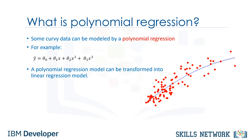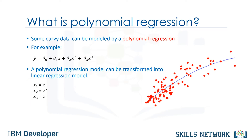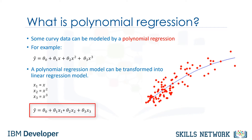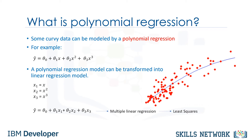Though the relationship between x and y is non-linear here, and polynomial regression can fit them, a polynomial regression model can still be expressed as linear regression. Given the third-degree polynomial equation, by defining x1 equals x, x2 equals x squared, and so on, the model is converted to a simple linear regression with new variables as y-hat equals theta 0 plus theta 1 x1 plus theta 2 x2 plus theta 3 x3. This model is linear in the parameters to be estimated. Therefore, polynomial regression is considered to be a special case of traditional multiple linear regression, and you can use the same mechanism as linear regression to solve such a problem.